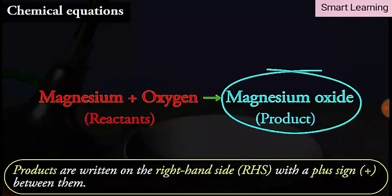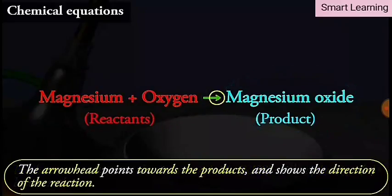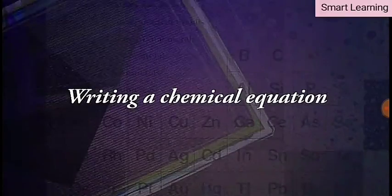Similarly, products are written on the right hand side, that is RHS, with a plus sign between them. The arrowhead points towards the products and shows the direction of the reaction.